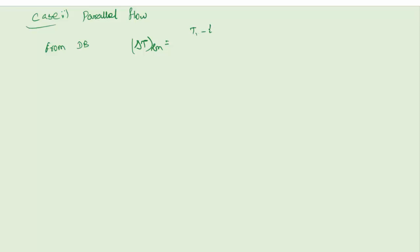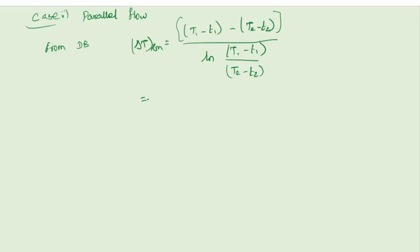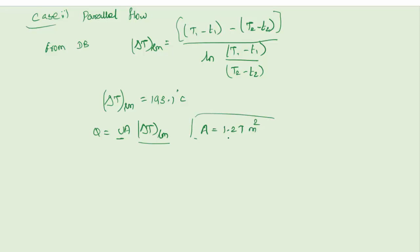Case 2: Parallel flow. From the data book, the ΔT_lm formula for parallel flow is: ΔT_lm equals [(T1 - t1) - (T2 - t2)] divided by ln[(T1 - t1)/(T2 - t2)]. Substituting all values, ΔT_lm for parallel flow equals 193.1°C. Using Q equals U·A·ΔT_lm: 750 × A × 193.1, the area A equals 1.27 m² for parallel flow.